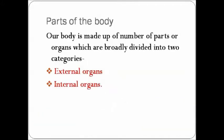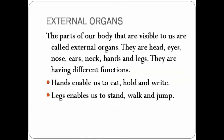Our body is made up of a number of parts or organs which are broadly divided into two categories: internal organs and external organs. The parts that are visible to us are called external organs. The body parts that are visible to our eyes are called external organs.